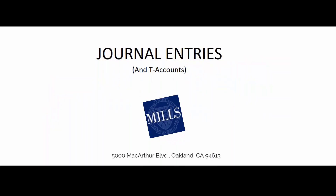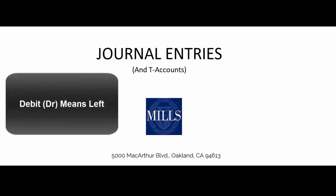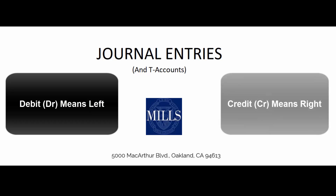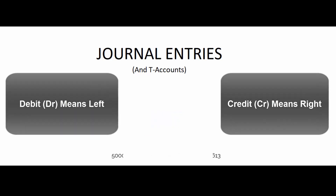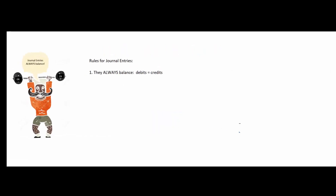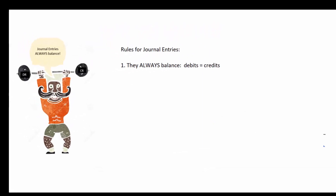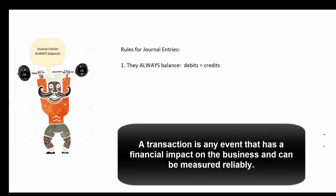Let's talk about journal entries and, to a lesser extent, T-accounts. Journal entries are how we record transactions. We use debits and credits. Debit means left, credit means right — one isn't good, one isn't bad. Transactions are any event that has a financial impact on the business and can be measured reliably.